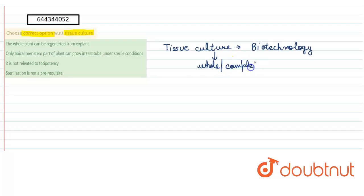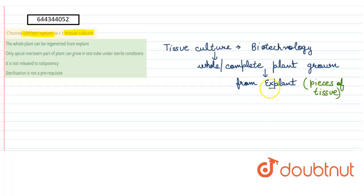And what is an explant? Explant is a piece of tissue from the original plant. It is a single piece or multiple pieces of tissue which is taken from the original or the parent plant. So let's see the options again.